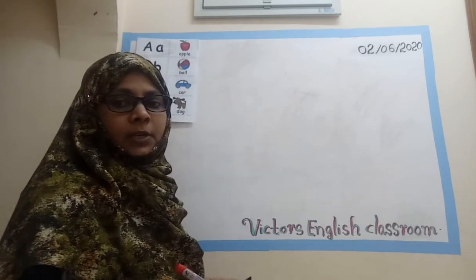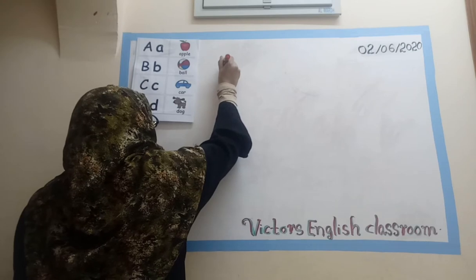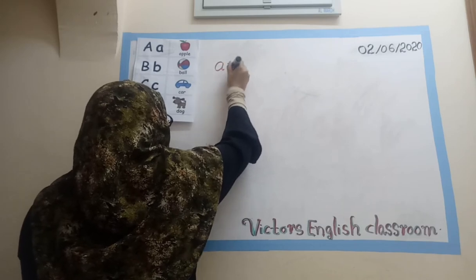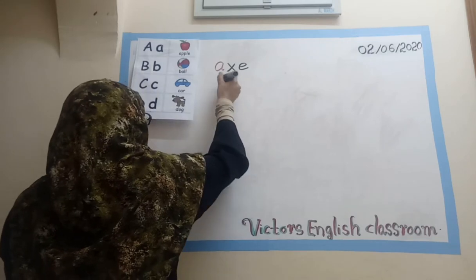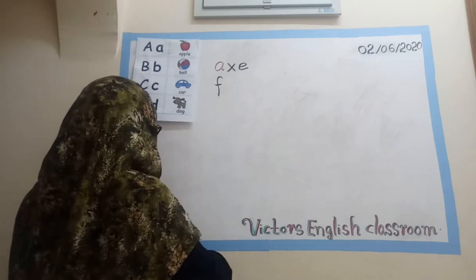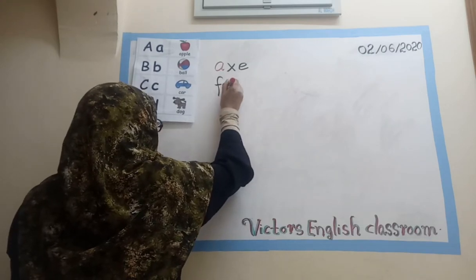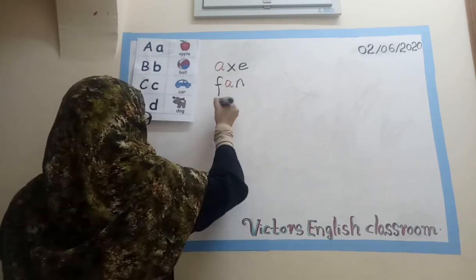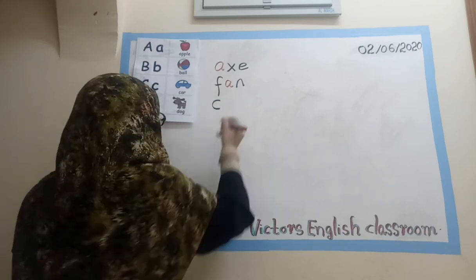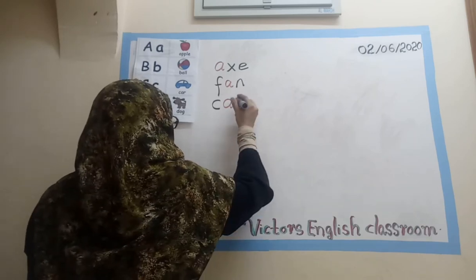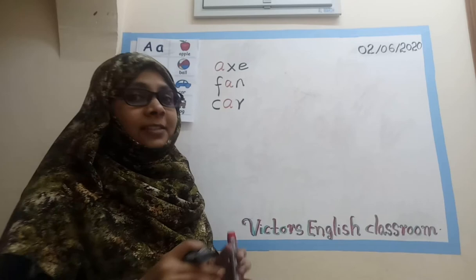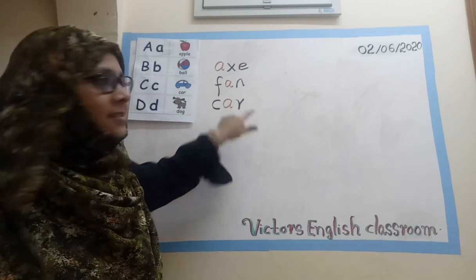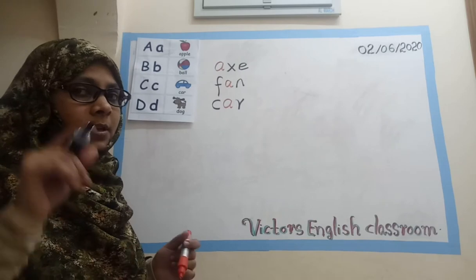Yeah, ah for apple. Ah for apple! How many words with the letter A? Which are they? I think you got the sound. Hats, pan, car. Okay, then I will use some words with that sound.